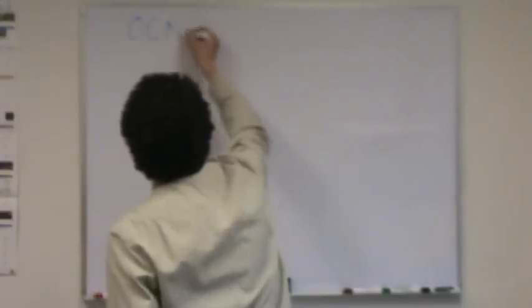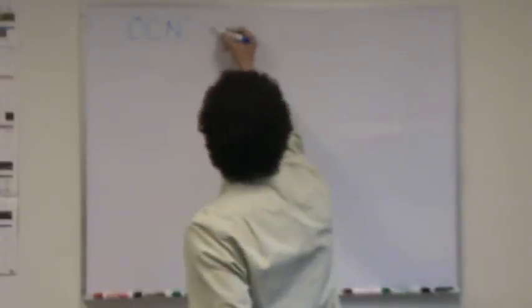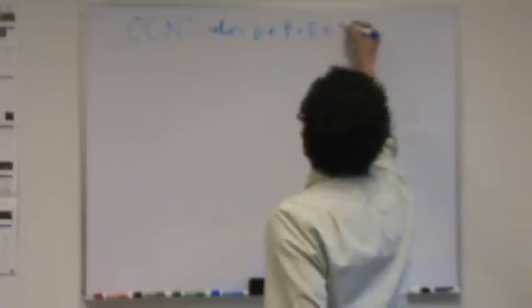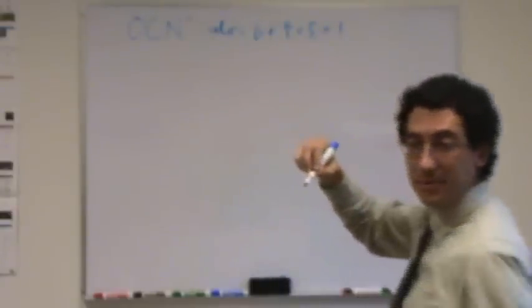O, C, N minus. Okay. First step, valence electrons. Always the first step. O is 6, carbon is 4, nitrogen is 5, and then plus one more because it has a minus 1 charge. So that's 16.